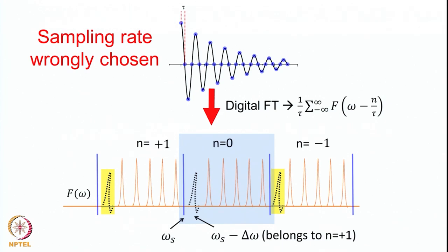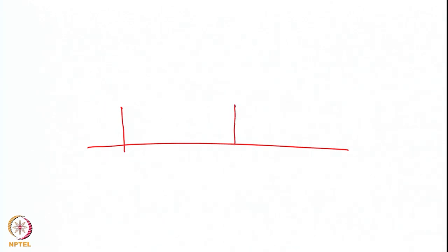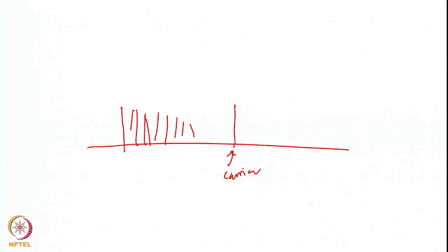Depending upon what sort of detection system you choose, there will also be folding of noise. This explains how the folding of signals happens — it is the consequence of digitization of your FID. In the case of single channel detection, you put the carrier at one end of the spectrum. As a result of Fourier transformation, you generate both positive and negative frequencies, and the negative ones may appear in this area, but that does not interfere with any of your signals.